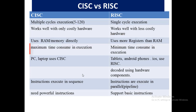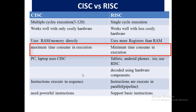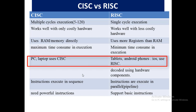In CISC, maximum time is consumed in execution — it takes more and more time for a single instruction to execute. While RISC takes very less time to execute a single instruction. In terms of real-world usage, laptops use CISC, while tablets, Android phones, and iOS devices use RISC.